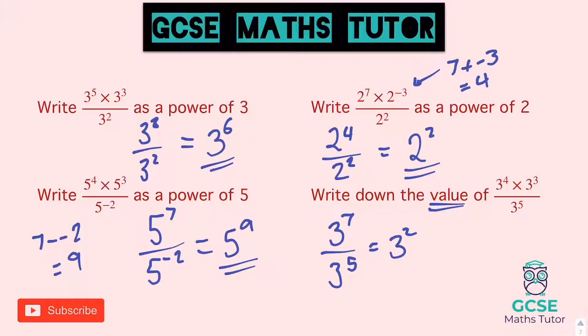And three squared has a value of nine — three times three is nine. So I'd actually write down the value: nine. So just take note of the language and be careful. Now that is it — I've got one quick one to show you here.